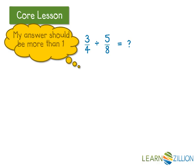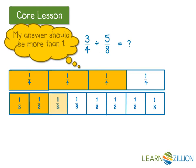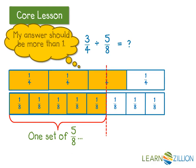First, I will show my dividend with 3 fourths of the whole rectangle shaded. Then I will shade 5 out of 8 equal pieces below. This amount represents 1 set of 5 eighths. I can see that 1 entire set of 5 eighths fits into 3 fourths. But I also see another piece that would fit.